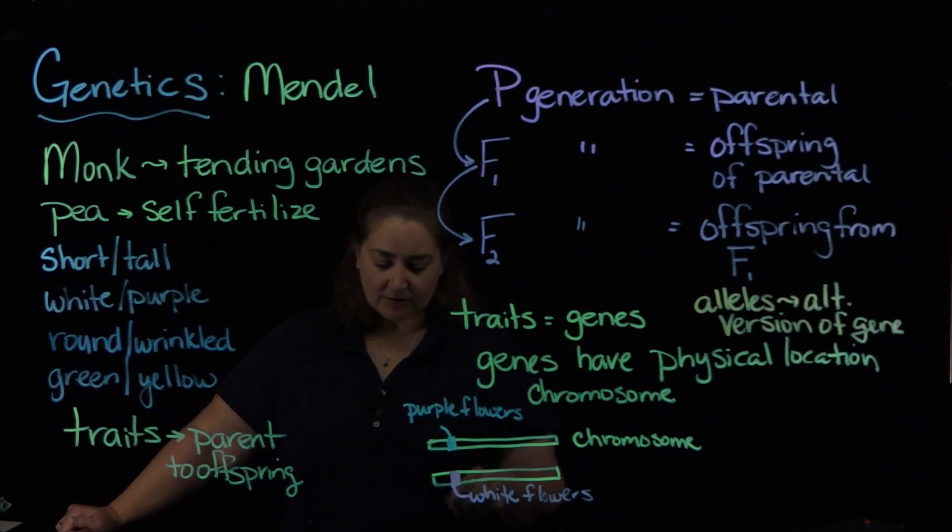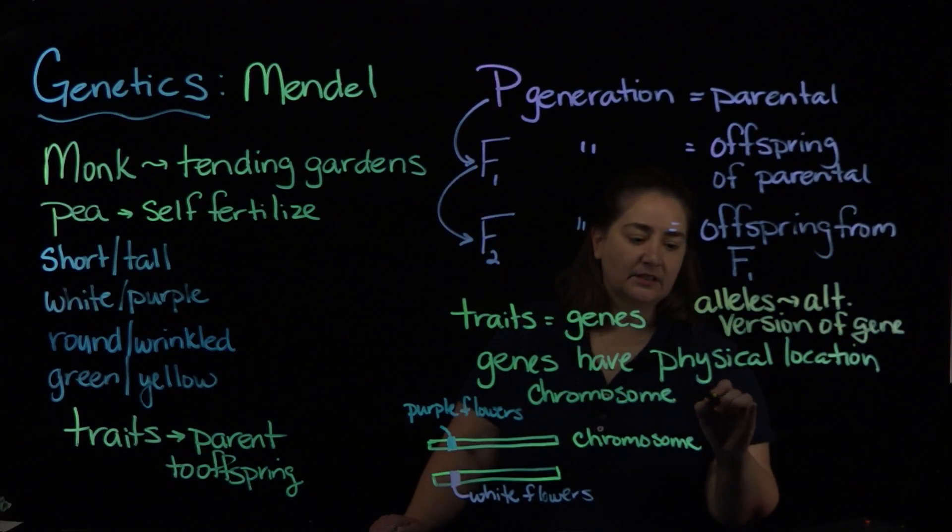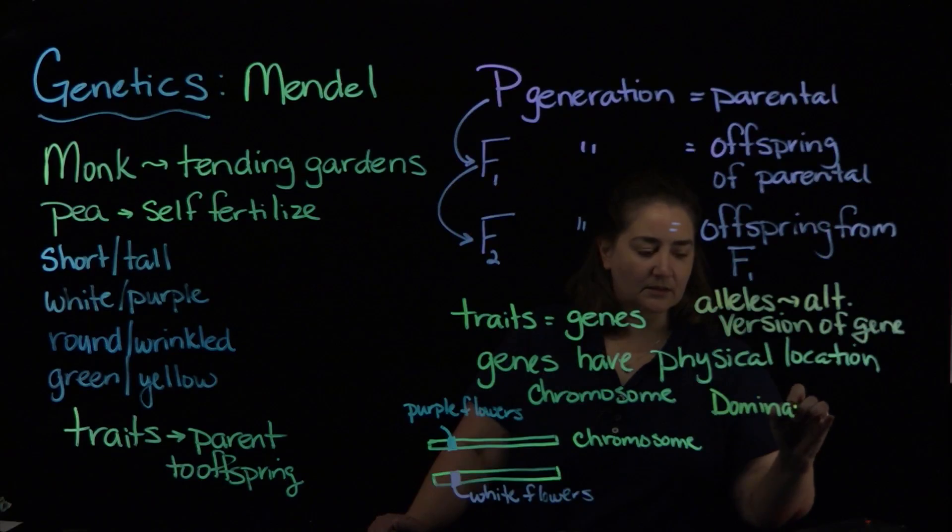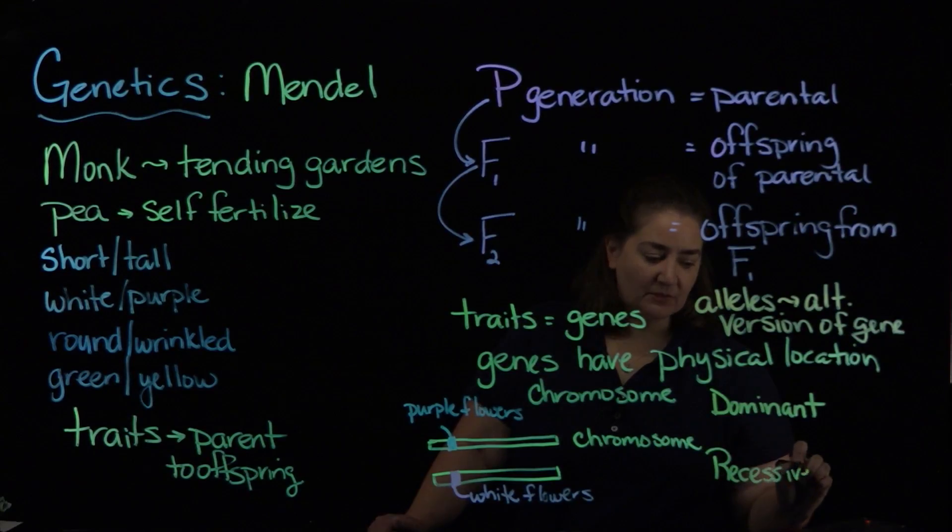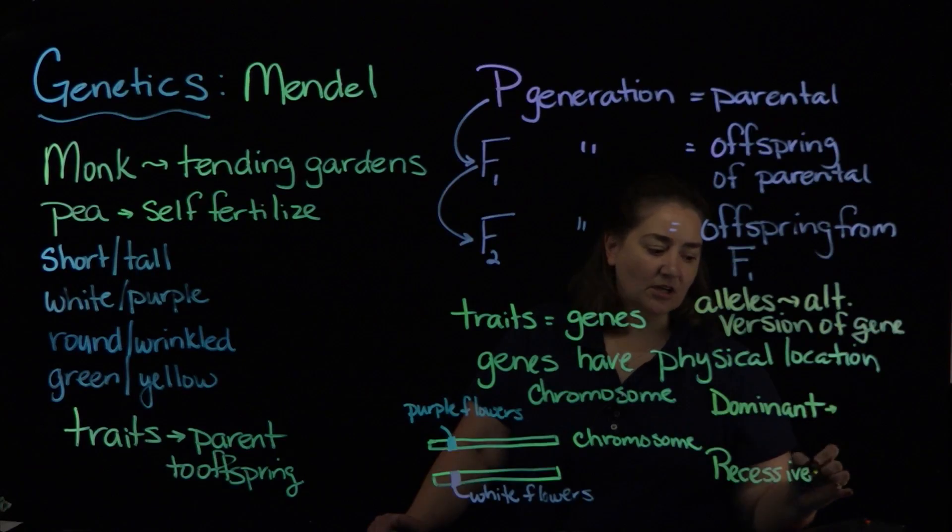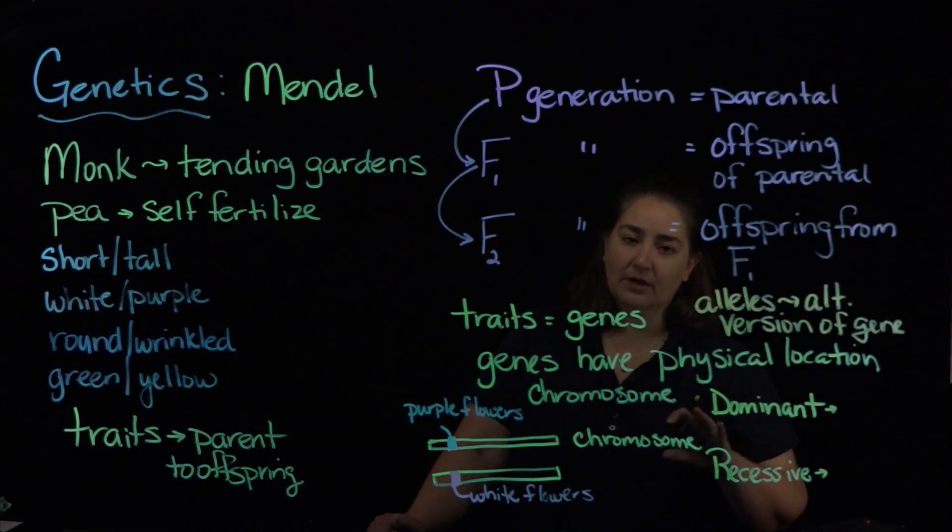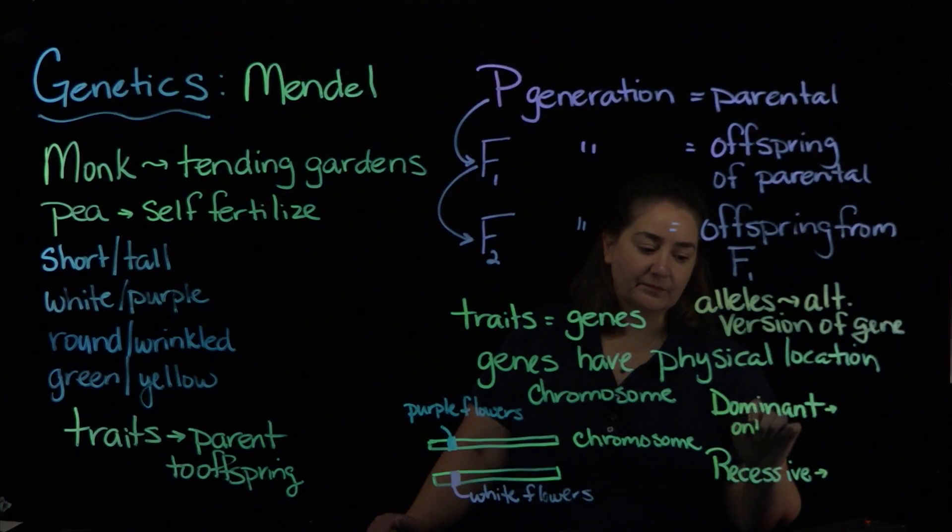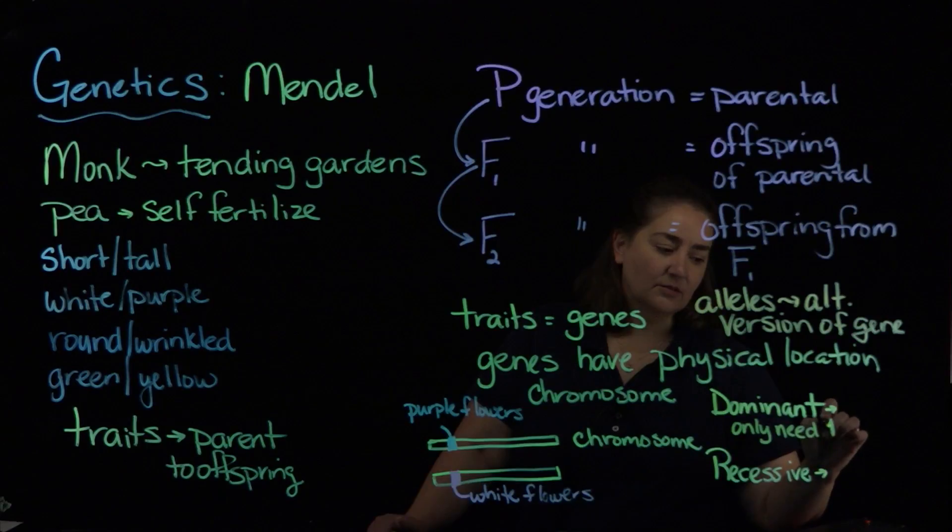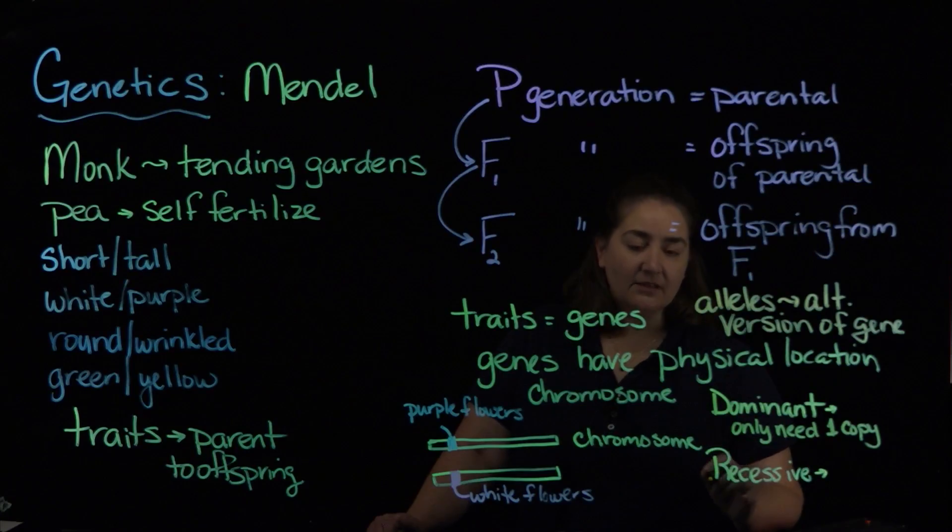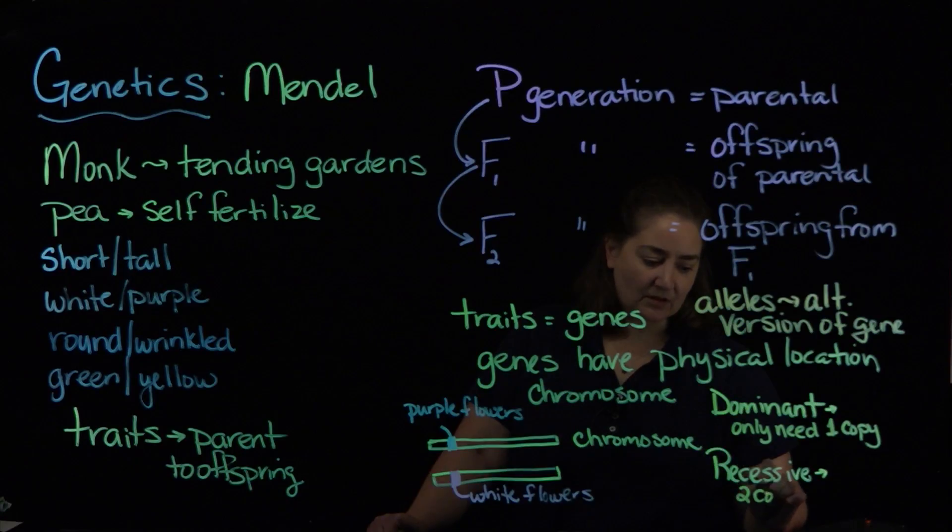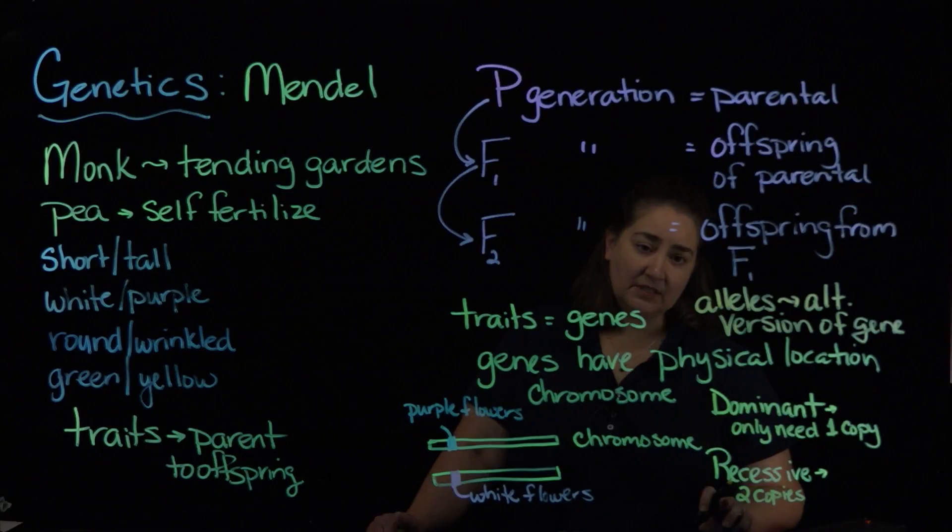And when we talk about alleles, something that's going to come up is the concept of that gene being dominant or that gene being recessive. And I'm going to talk a little bit more about dominance and recessive in the next video because I've kind of run out of board space again. But essentially what happens with genes that are dominant, you only need one copy in order to have that particular trait expressed. If a gene is recessive, you need to have two copies in order to see that particular trait.